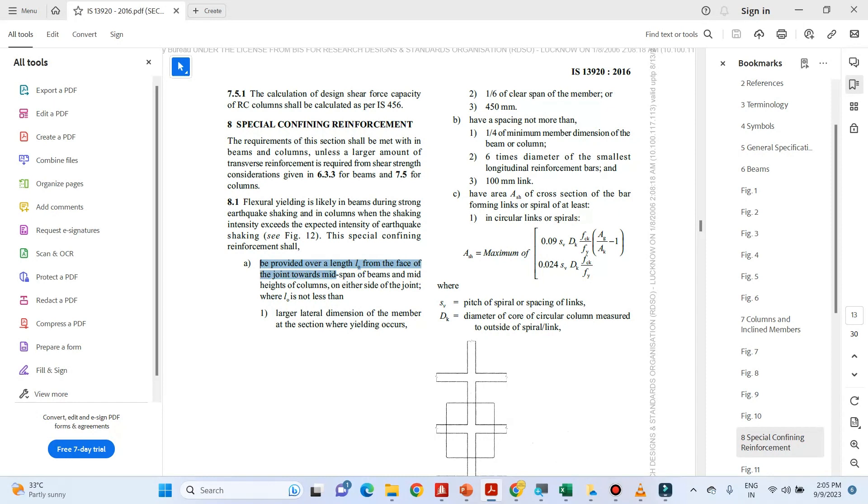side of the joint where L0 should not be less than largest lateral dimension of the member, 1 6th of the clear span and 450 mm. And having a spacing not more than 1 4th of the minimum member dimension of beam or column, 6 times dia of smallest L0 bar and 100 mm which I have already discussed.